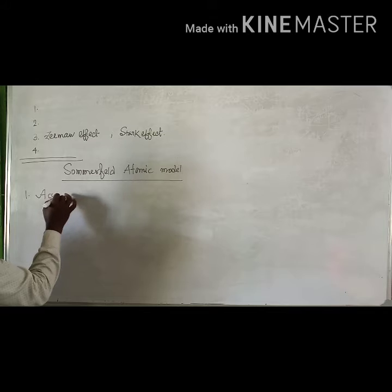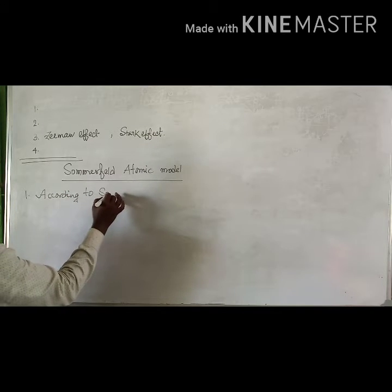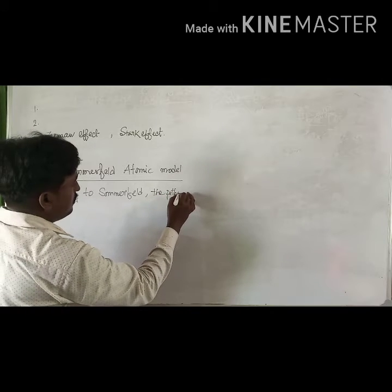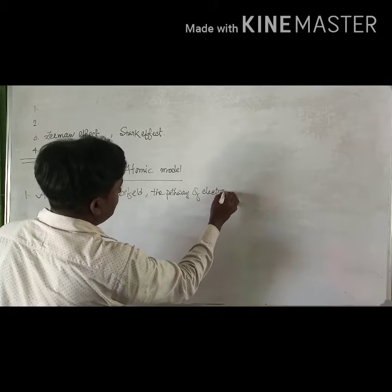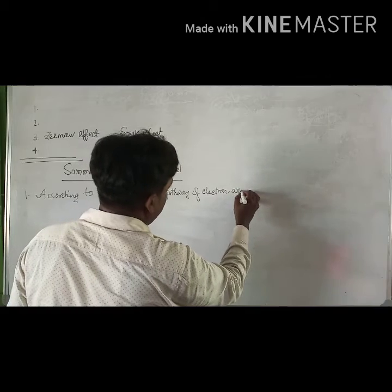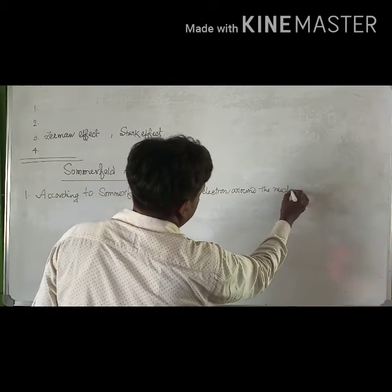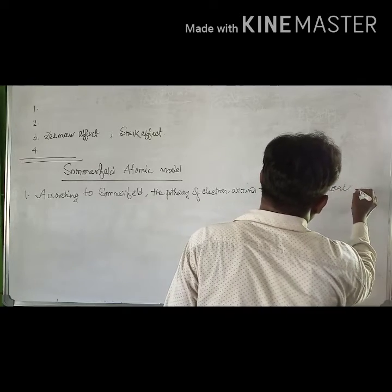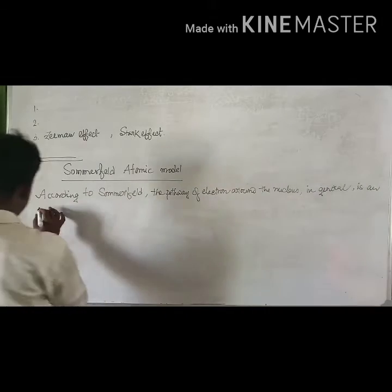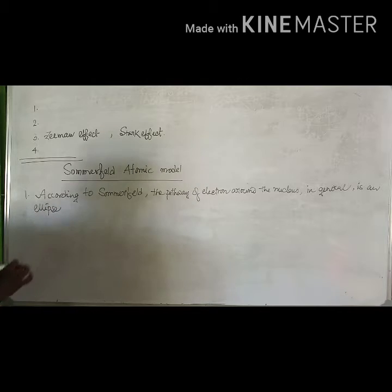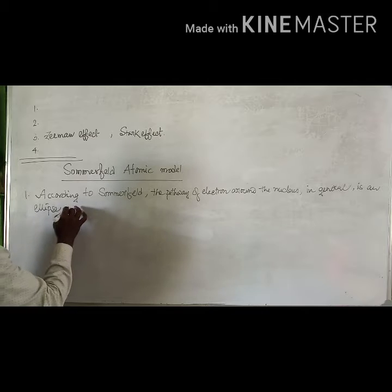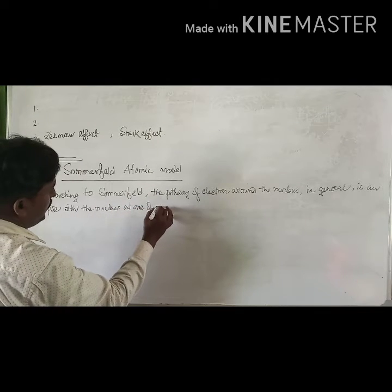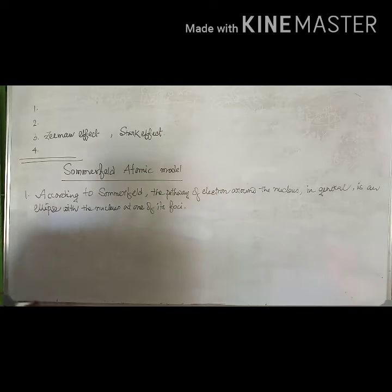Number 1: According to Sommerfeld, the pathway of electron around the nucleus, in general, is an elliptical path, with the nucleus at one of its foci.